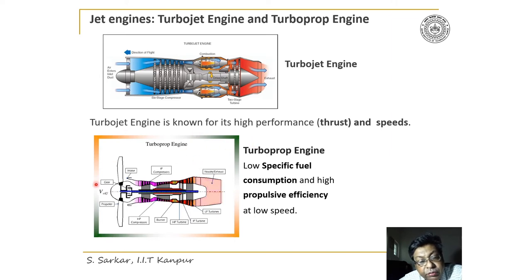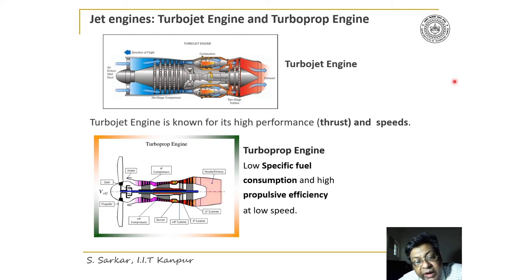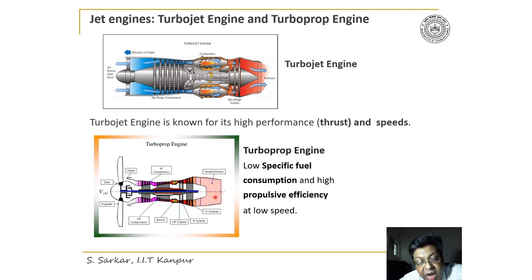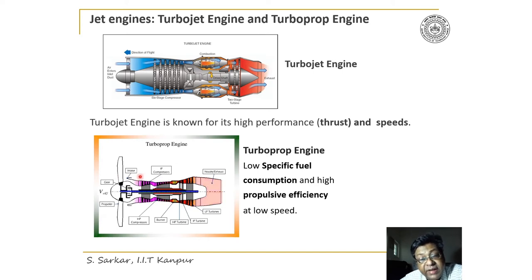The turboprop engine holds a propeller in front of the engine and is characterized by high propulsive efficiency and low specific fuel consumption. Air is sucked by a multi-stage compressor which compresses it. Combustion occurs in the combustion chamber and the high-pressure, high-temperature gas is fully expanded in a turbine to produce power output sufficient to run both the propeller and the compressor. The propeller rotates at slower speeds, and the pressure rise across the propeller is relatively small but sufficient to produce thrust.